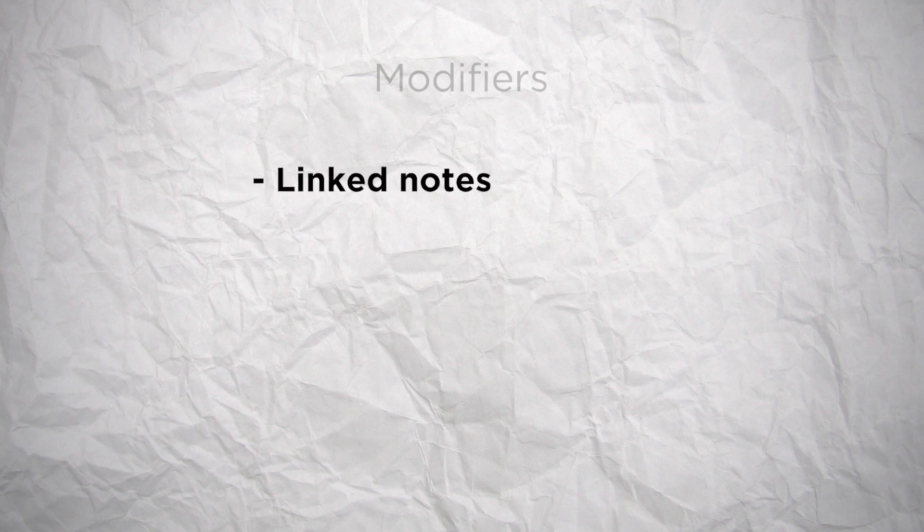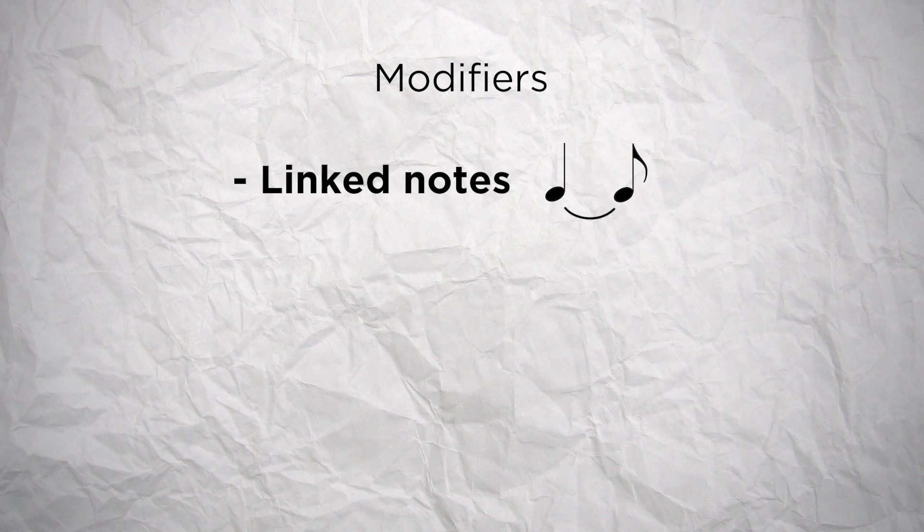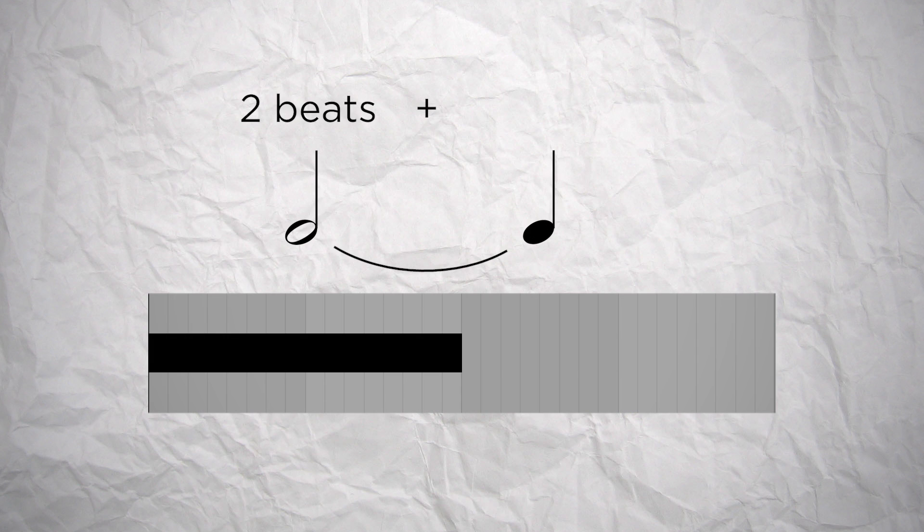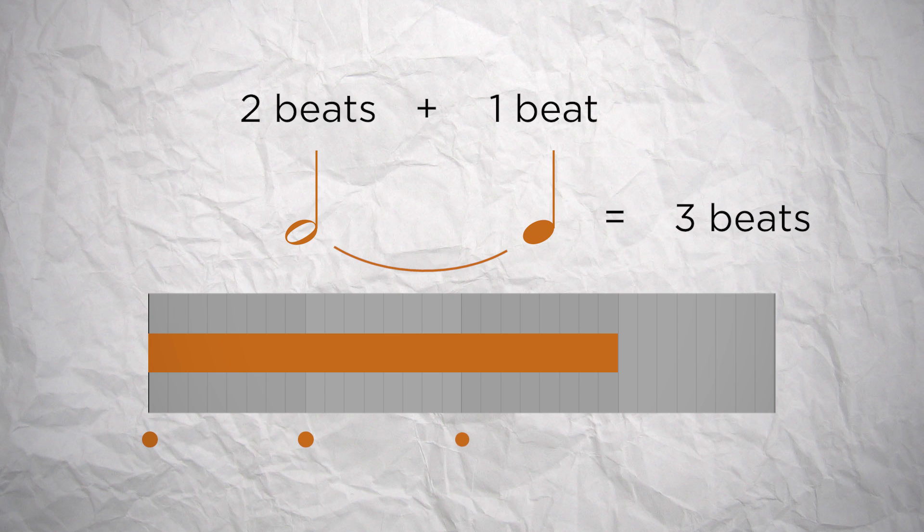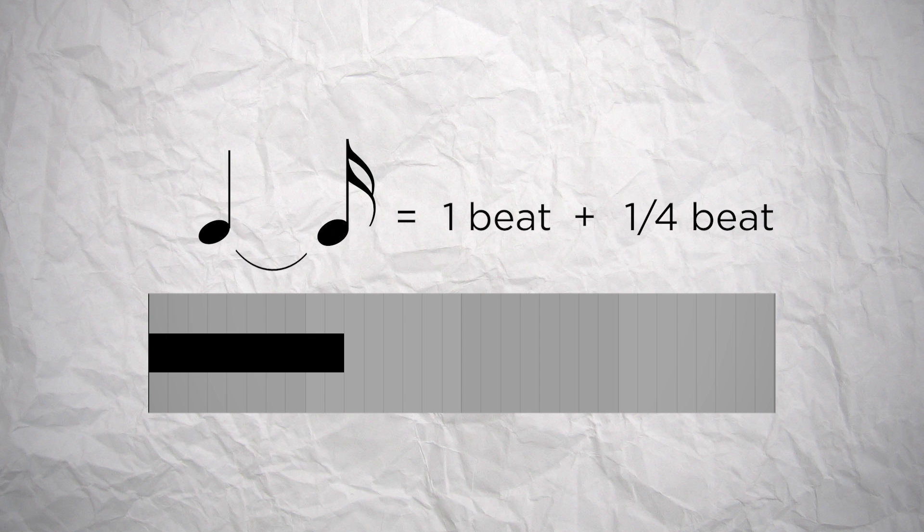To have more variety, we can then add modifiers to these notes to modify the length a bit. First you can link them, so their length add up. So a half note, which is 2 beats, linked to a quarter note, which is 1 beat, would make a note that would last for 3 beats. Or a quarter note, linked to a sixteenth note, would make a note that would last for 1 beat plus the quarter of a beat.